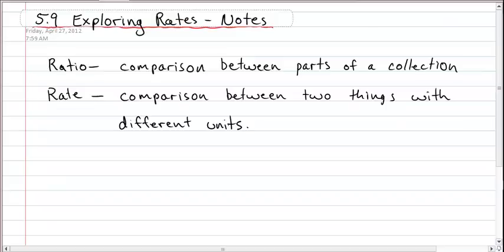A ratio, remember, happens to be a comparison between parts of a collection. Example: you have a collection of shoes, and you can compare running shoes to dress shoes, or boots to shoes, all in a collection of items. Kind of like we did with M&Ms, where you have a comparison between red M&Ms and green M&Ms.